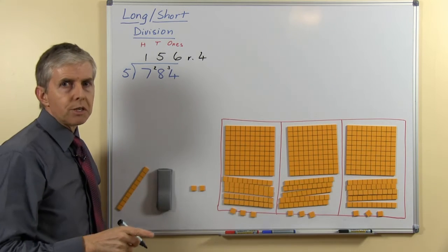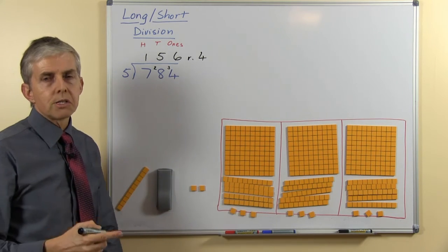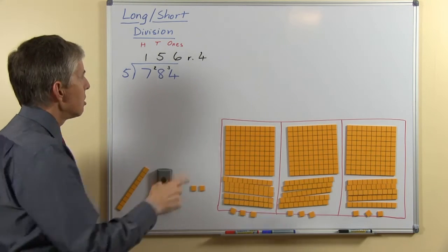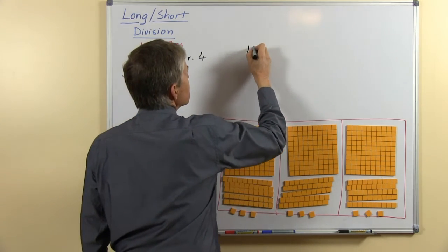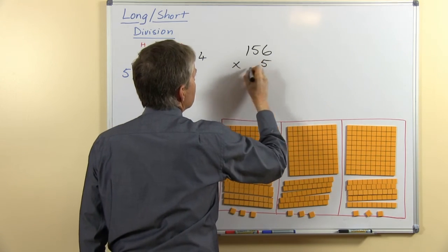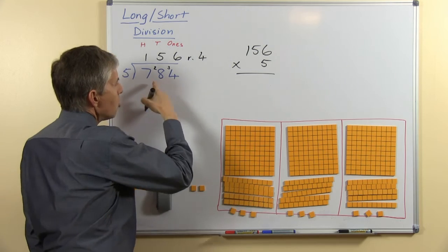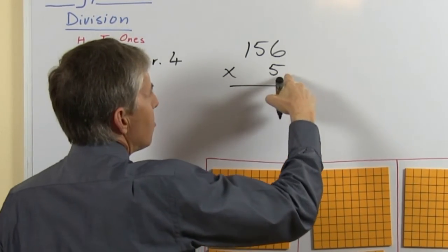One last step I'll show you which can be very useful when you're doing this is to reverse the process to check your answer. So 156 times 5 will equal how much? If we're correct it'll be almost the same as this, I'll show you what I mean in a moment.